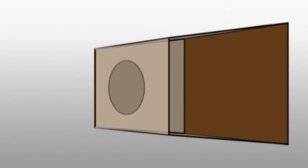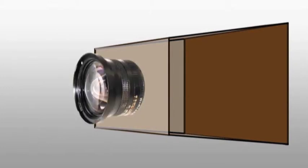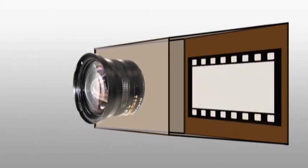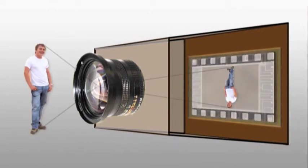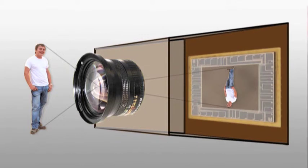The basic camera is composed of a light proof box with a lens on one side and an imaging device or target on the other. In the past the target would have been film, but these days the target is usually a light sensitive computer chip called a charge coupled device, or CCD for short.